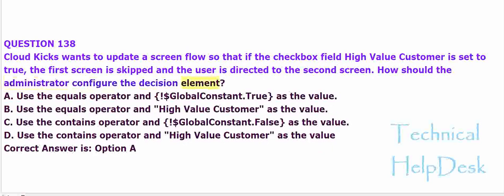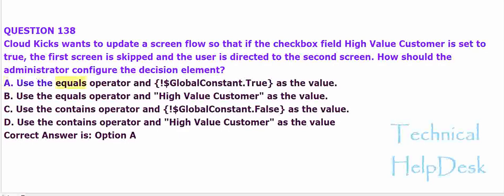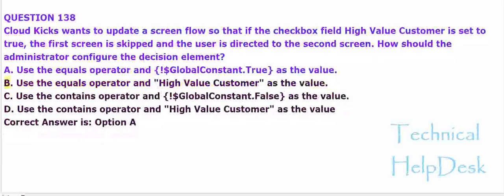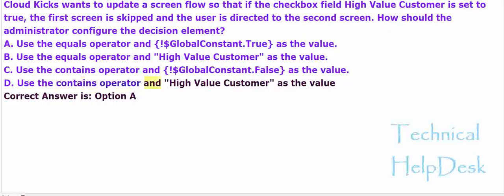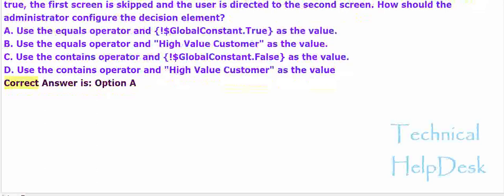A. Use the equals operator and dollar global constant dot true as the value. B. Use the equals operator and high value customer as the value. C. Use the contains operator and dollar global constant dot false as the value. D. Use the contains operator and high value customer as the value. The correct answer is option A.